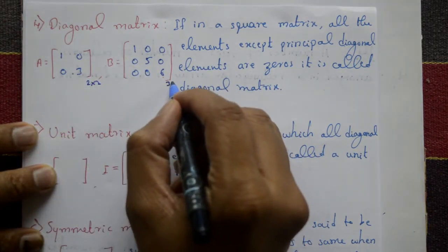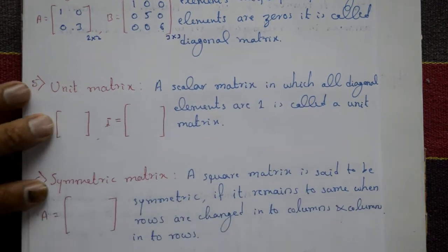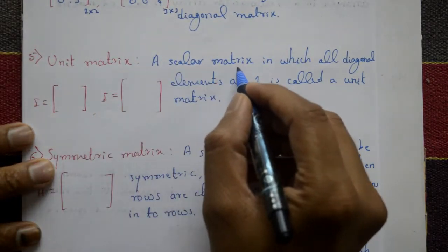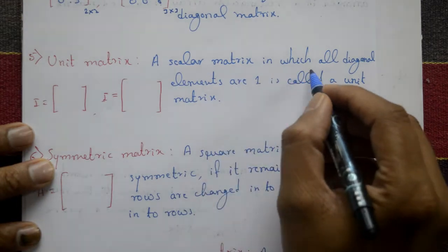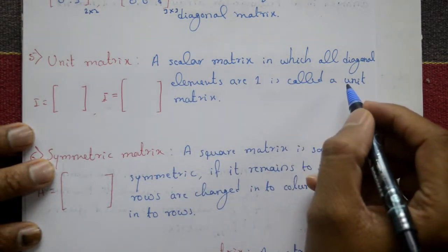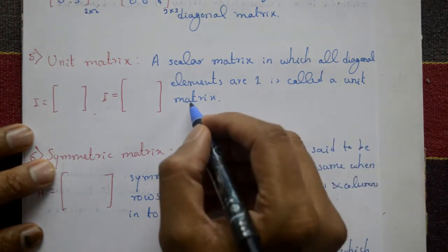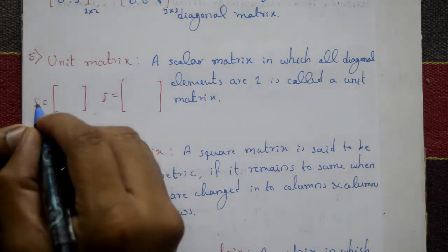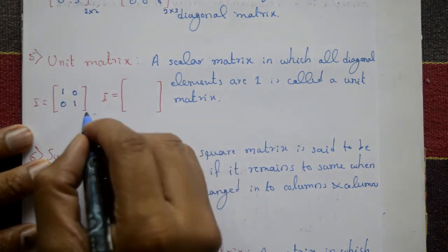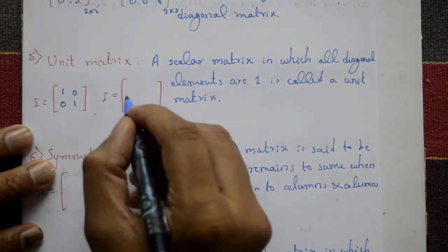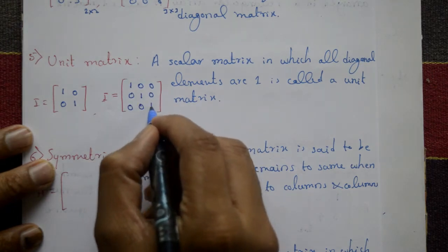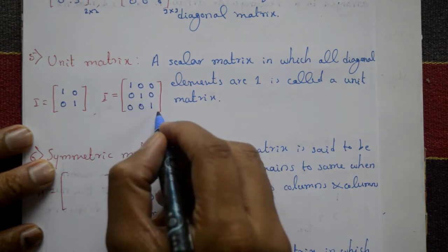Fifth type: unit matrix. A scalar matrix in which all the diagonal elements are 1 is called a unit matrix, denoted by I. Example: [1, 0; 0, 1] is of order 2×2, and [1, 0, 0; 0, 1, 0; 0, 0, 1] is of order 3×3.